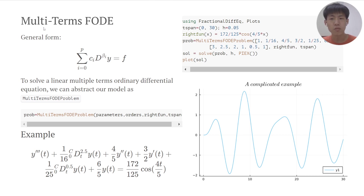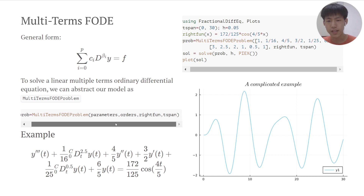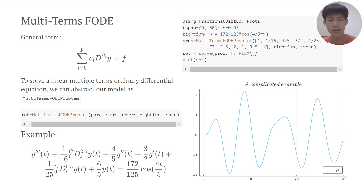As for the multi-term FODE, there are many fractional differential operators in the equation. To solve this problem it's very easy — as in this example, we pass the parameters, the different orders, the right-hand-side functions, and the time span. Then we get our numerical solutions.